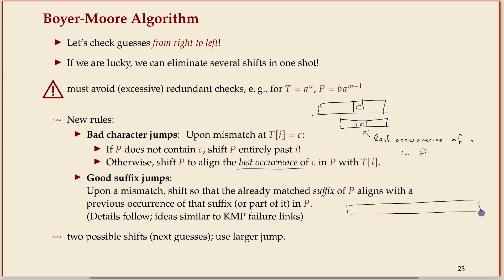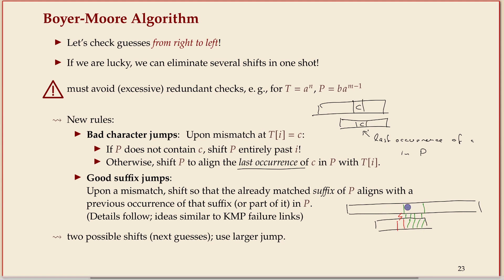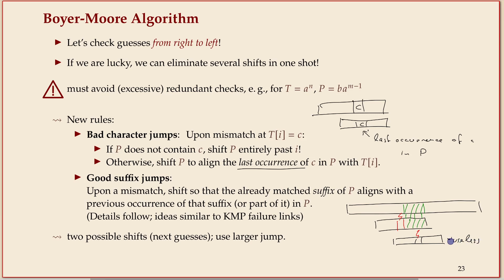The second heuristic is a little more subtle. In the general setting, we have some characters in alignment and then a mismatch when comparing right to left. We now have to shift the pattern to avoid that mismatch, but we'd like to keep the matched part. It would be useless to shift the pattern in a way that creates a mismatch between the already-matched portion and the pattern. The good suffix heuristic tries to shift the pattern forward so that the part already matched in the text aligns with the pattern.